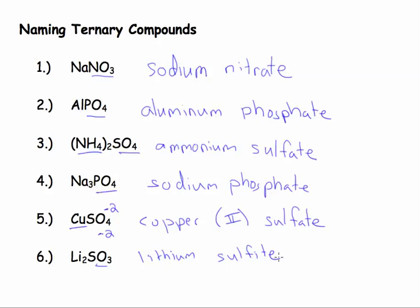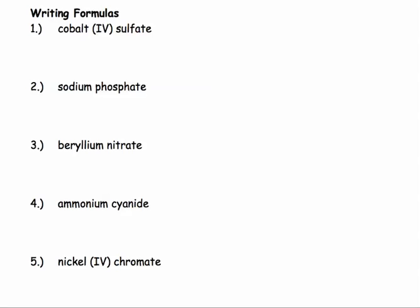Let's practice writing formulas for ternary compounds. So when we're writing formulas for ternary ionic compounds, we use the exact same rules. We do drop and swap. So we start by writing our ions.